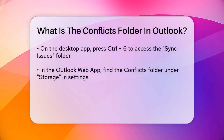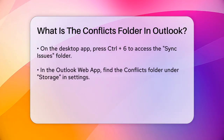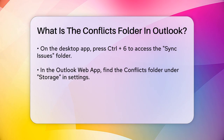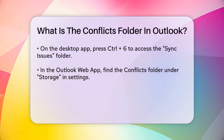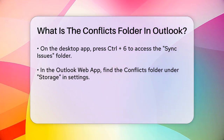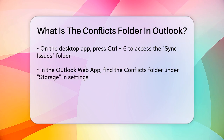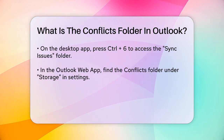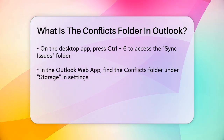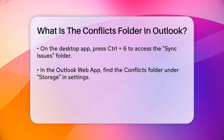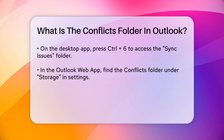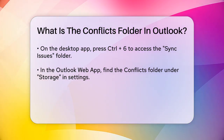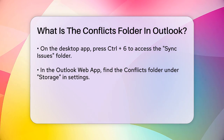To find this folder, you need to make hidden folders visible in Outlook. On the desktop app, press Control-6 to reveal the sync issues folder. Inside this folder, you'll see the conflicts subfolder. In the Outlook web app, you can navigate to the settings, search for storage, and you'll find the conflict folder listed there.